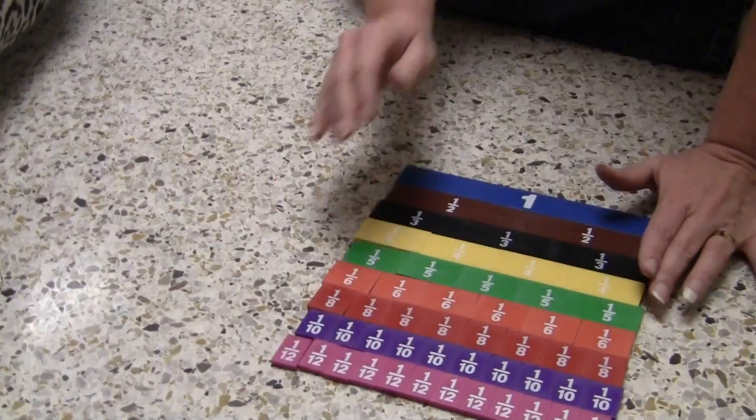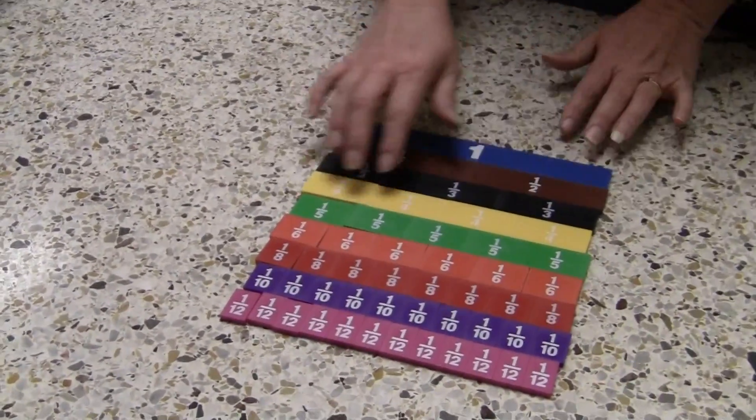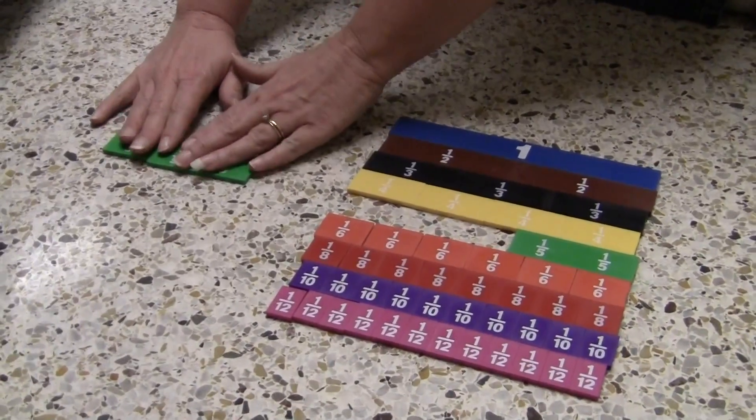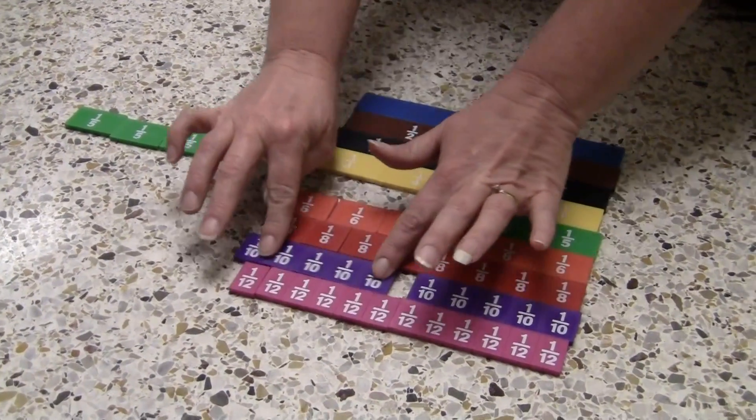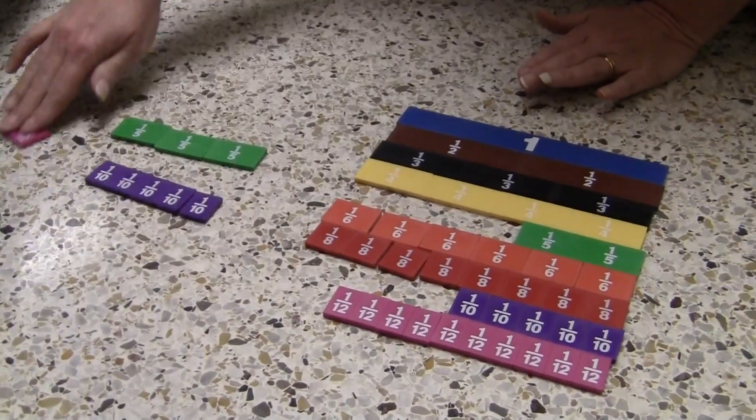You can move on to larger fractions such as three-fifths, five-tenths, and two-twelfths and ask them to order them from least to greatest.